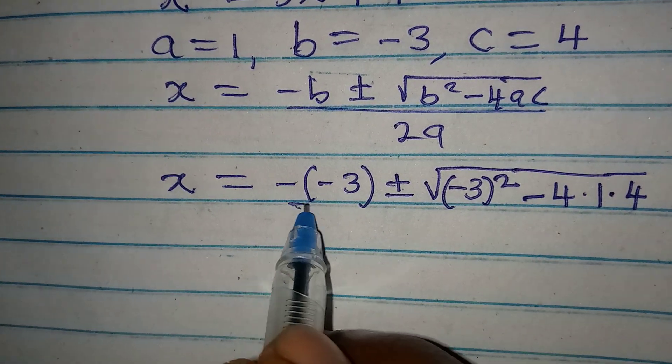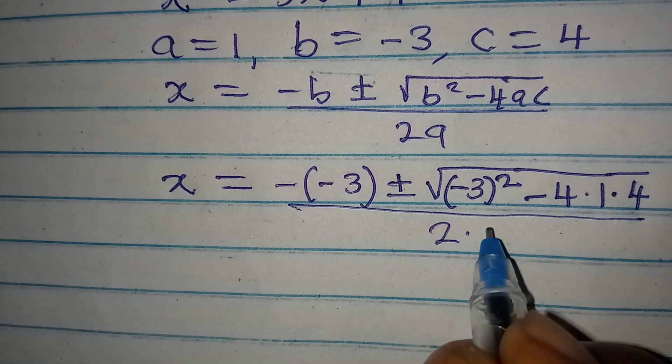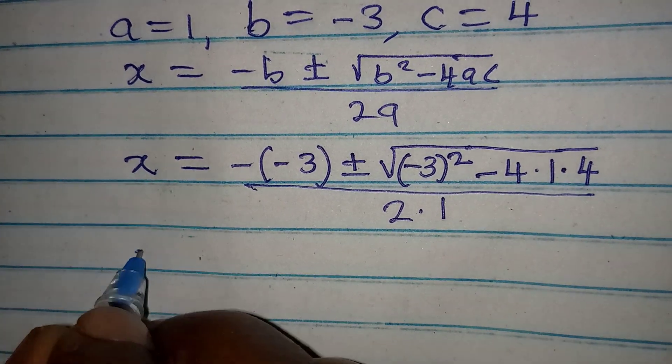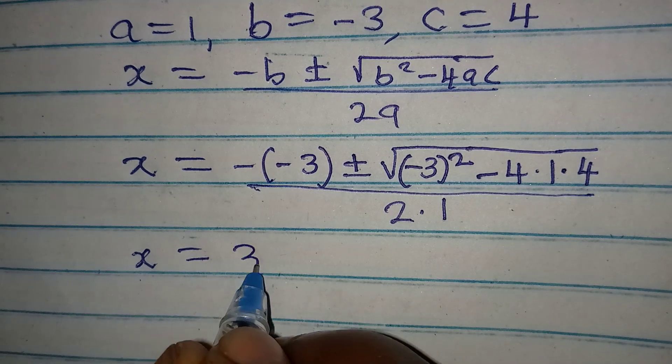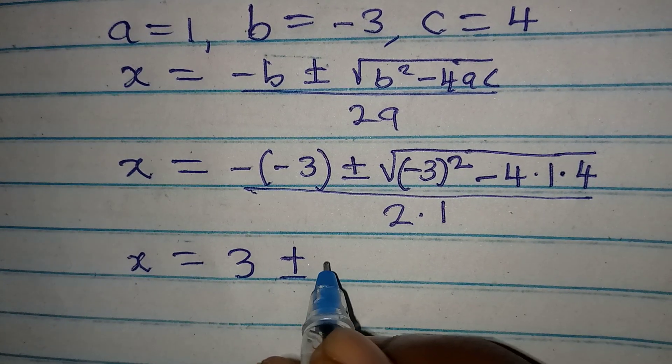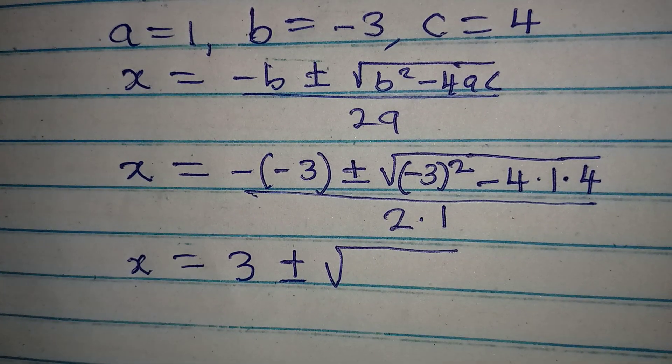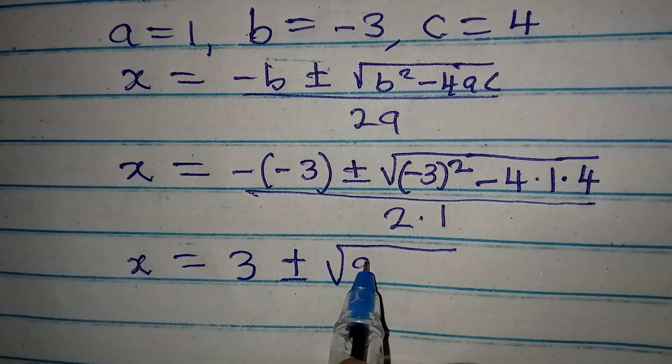Now, to continue, we have x to be equal to negative negative, which gives positive 3. Then, plus or minus, we have minus 3 squared, or negative 3 in brackets squared, which is equal to 9.